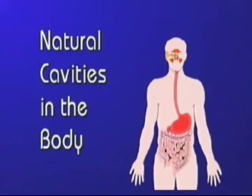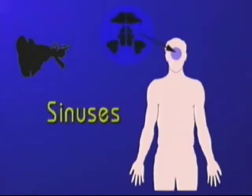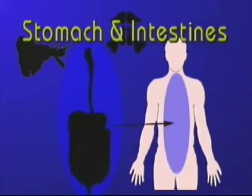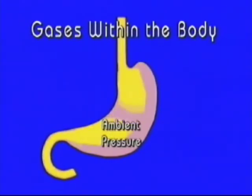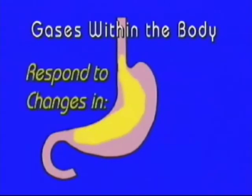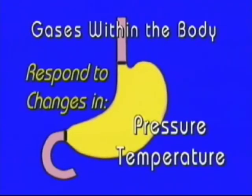The four areas of the body where trapped gas can occur are the middle ear, sinuses, stomach, and intestines. The gases within the body are governed by physical and chemical laws that describe how a volume of gas changes in response to changes in pressure and temperature.